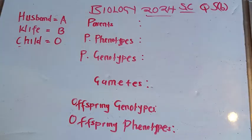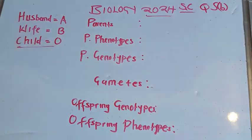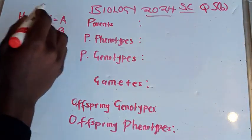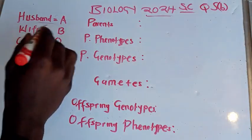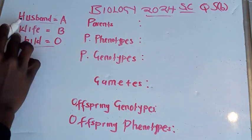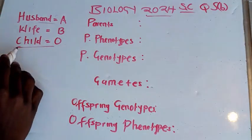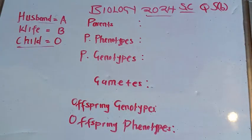In this question, we are trying to show the possibility of having a child with blood group O, where the husband has blood group A and the wife has blood group B. This question is very simple — there are just some principles you need to understand to solve it correctly.